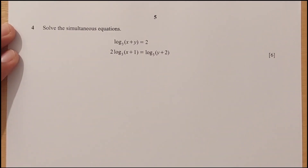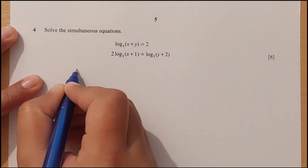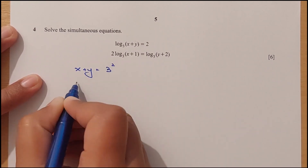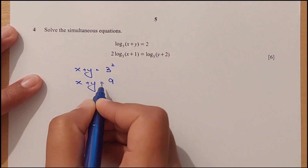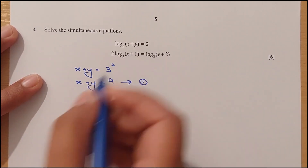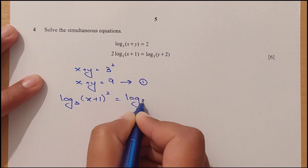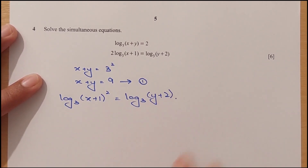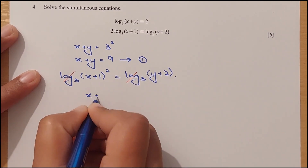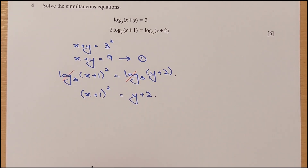Question 4: solve the simultaneous equations. Rearranging the first equation: log base 3 of (x plus y) equals 2, so x plus y equals 3 squared equals 9 — this is equation 1. For the second equation, bring the 2 to the power: log base 3 of (x plus 1) squared equals log base 3 of (y plus 2). Cancelling log base 3 on both sides, we get (x plus 1) squared equals y plus 2 — this is equation 2.